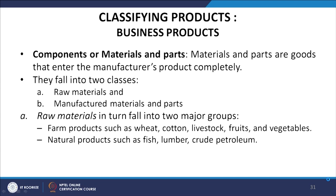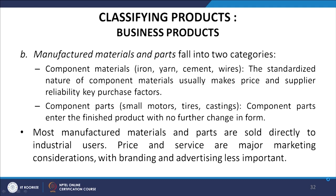Business products may be classified as components (materials and parts) and support products. Materials and parts are goods that enter the manufacturing process completely. They fall into two classes: raw materials — such as farm products (wheat, cotton, livestock, fruits, vegetables) and natural products (fish, lumber, crude petroleum) — and manufactured materials and parts. Manufactured materials and parts include component materials like iron, yarn, cement, and wire, whose standardized nature makes price and supply reliability key purchase factors.